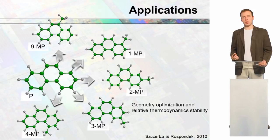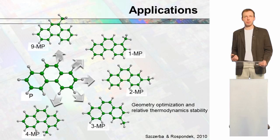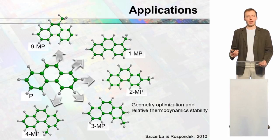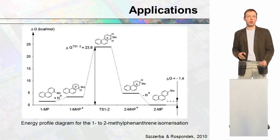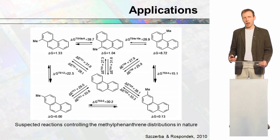We performed calculations for phenanthrene as an example of geometry optimization, considering five isomers where a methyl group is attached to different carbons on the phenanthrene rings. For each isomer, we performed geometry optimization and calculated their relative thermodynamic stabilities. We were also interested in possible reactions that turn one molecule into another — one isomer on the left, another on the right, with the energy of the transition state. Based on that, it was possible to predict and explain suspected reactions occurring in natural rocks.